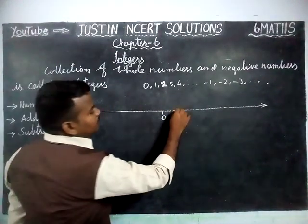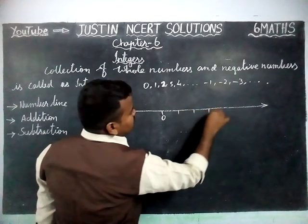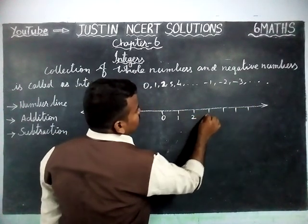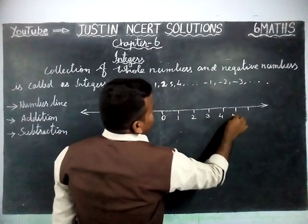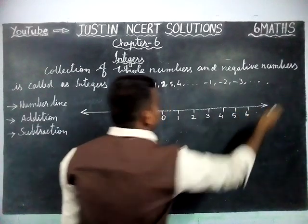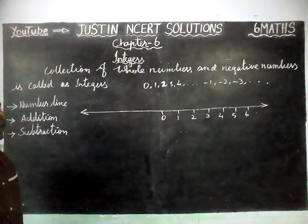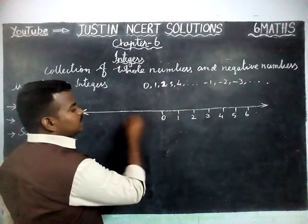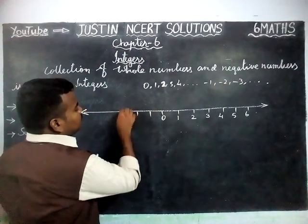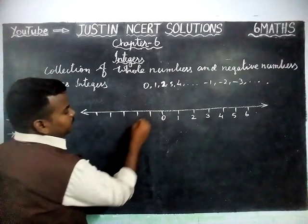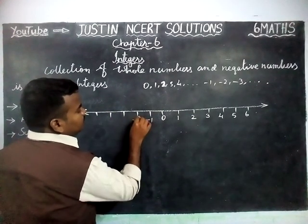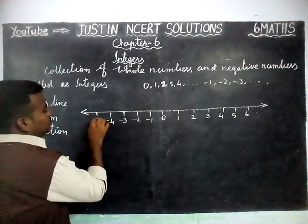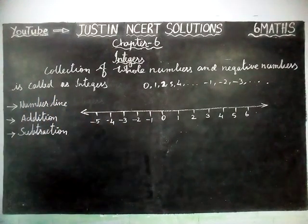On the right-hand side, we write only the positive numbers: 1, 2, 3, 4, 5, 6 — keep on going. On the left-hand side from 0, we mark the negative numbers: minus 1, minus 2, minus 3, minus 4, minus 5 — it keeps on going.